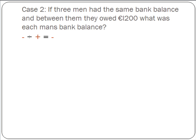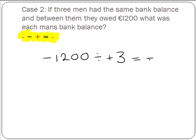Second case. If three men had the same bank balance and between them they owed 1,200 euro, what was each man's bank balance? In this case we're going to start off with minus 1,200, and it's going to be divided among 3 men, which is plus 3. So here we have a minus divided by a plus, and our answer is going to be a minus. And 1,200 divided by 3 will give us 400. So our answer is minus 400 euro — that is each man's bank balance.